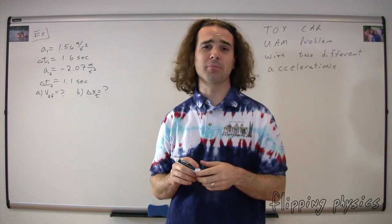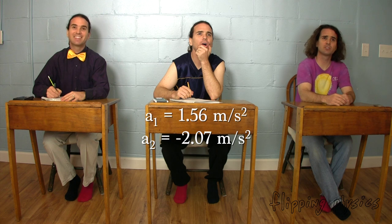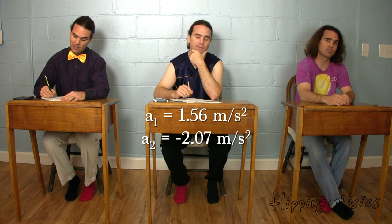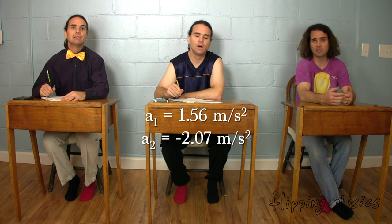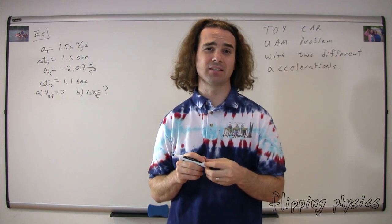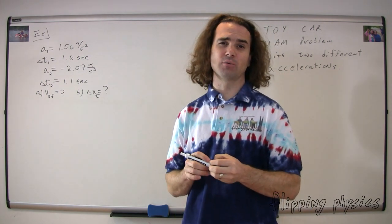Mr. P.: We know we can use the UAM equations — I need to know from the problem statement itself how do we know we can use the uniformly accelerated motion equations? Because the accelerations are equal to numbers: acceleration one equals 1.56 meters per second squared and acceleration two equals negative 2.07 meters per second squared, and those are both constant numbers — they don't change. So we can use the UAM equations. That's what the 'uniformly' in UAM means: the acceleration is constant.